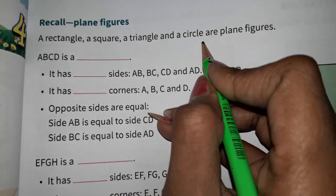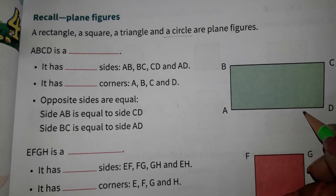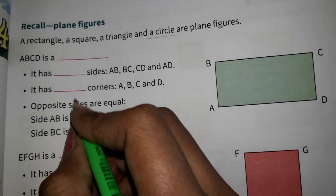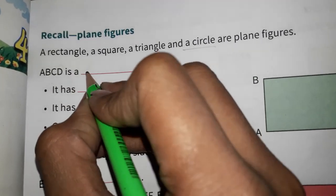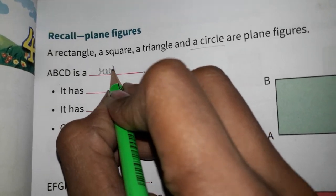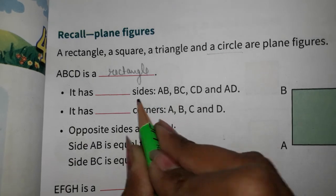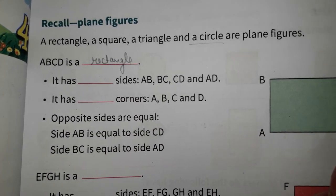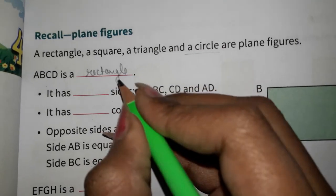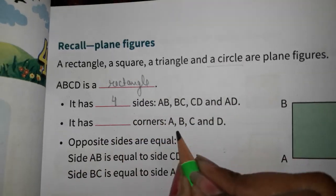Rectangle, square, triangle, circle. Yeh sari chizye ab aap ne maine bata di hai. Ab bas us chiz ko aap yaha pe recognize karo. So first is a, b, c, d is rectangle. It has how many sides are there? Dash sides. One, two, three. It has four sides.